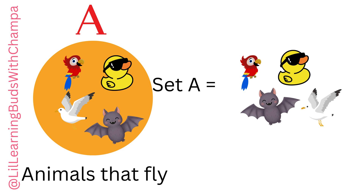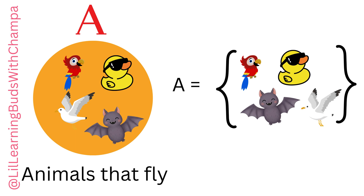And how do we represent a set? Using the curly brackets. So Set A has Parrot, Duck, Bat, and Seagull. See how I have opened the curly brackets and then closed it.